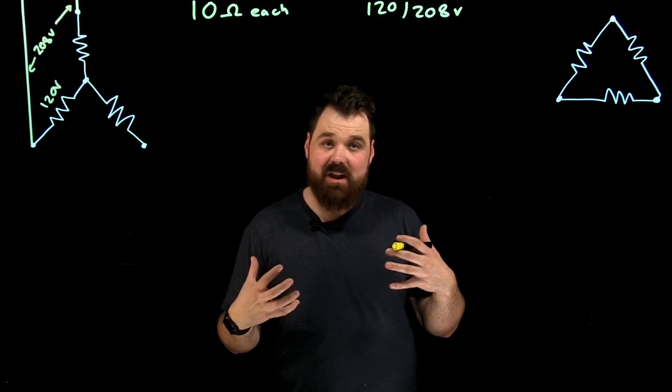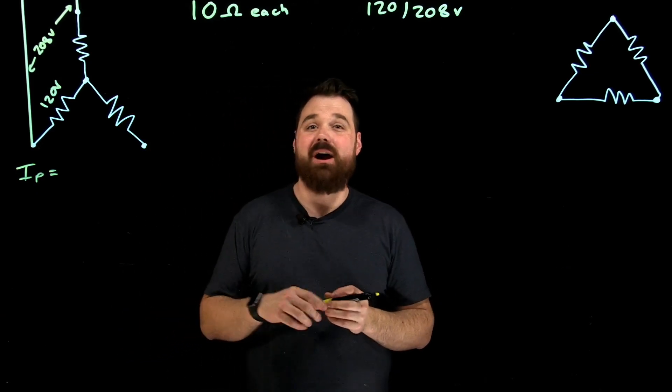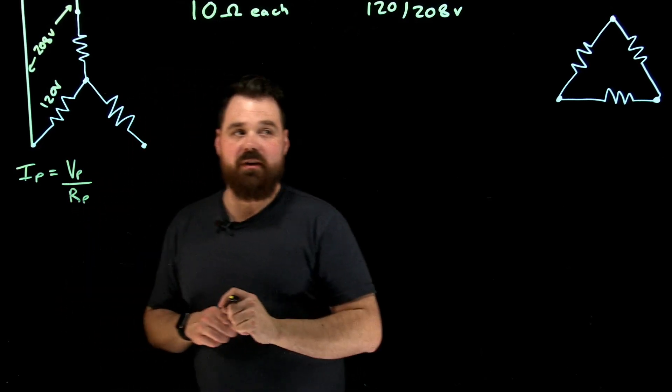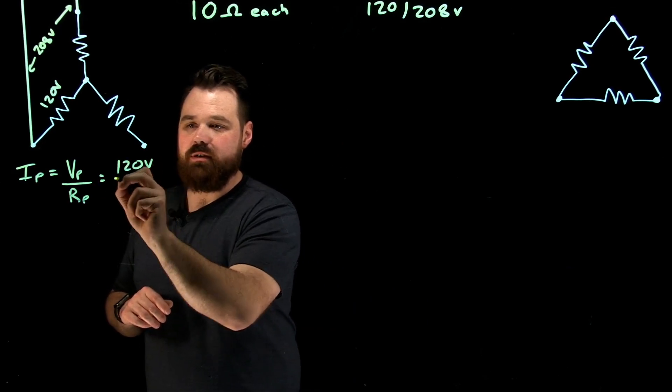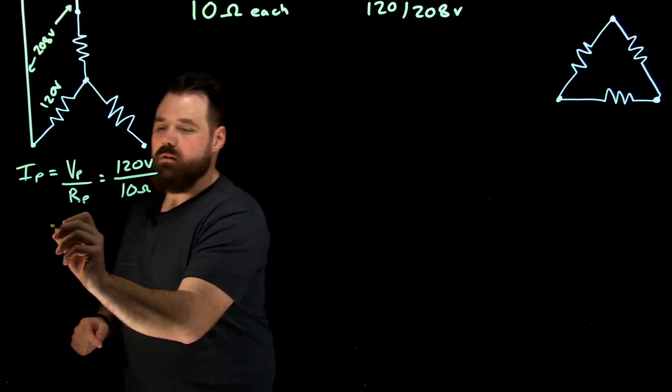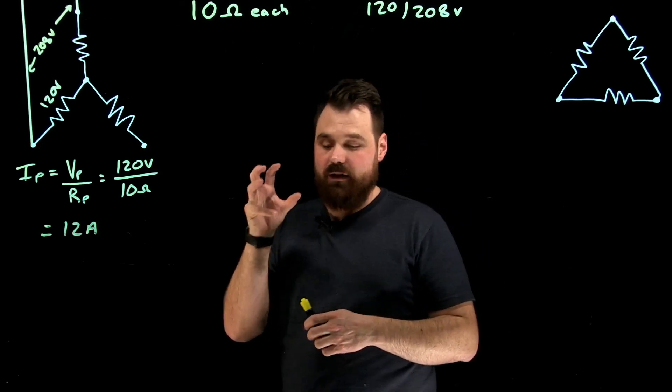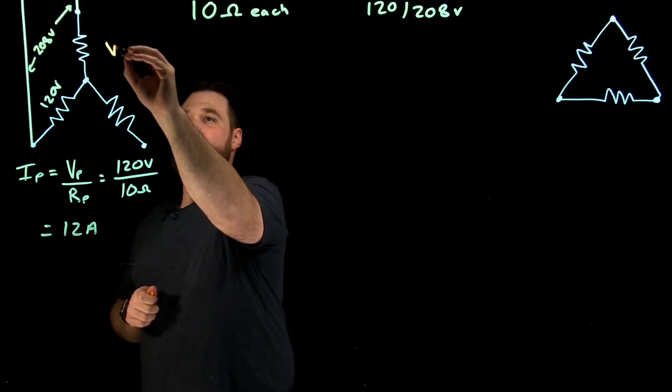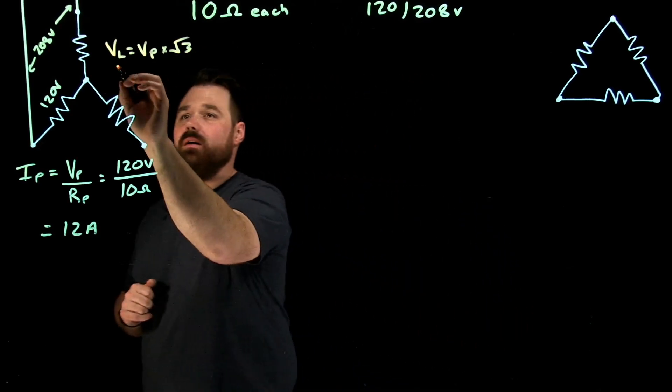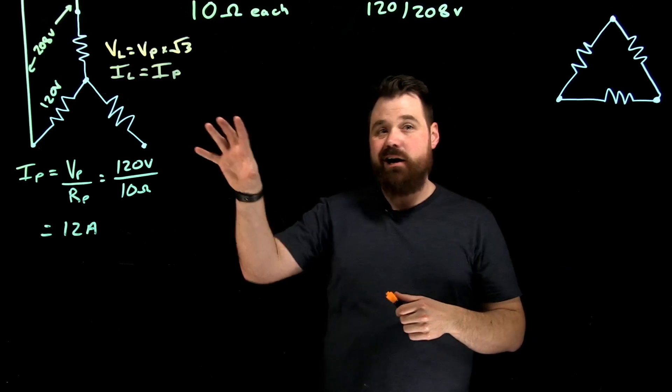So when I'm trying to figure out my current, I want to calculate my phase current. That's going to be my phase voltage divided by my resistance inside the phase, which of course here is 120 volts divided by 10 ohms. That's going to give me a phase current of 12 amps. And now we want to think back to everything we know about Y-connected circuits as well. We know of course that my V line equals V phase times root three. We also know that I line equals I phase. Those are my fundamental relationships in a Y-connected circuit.